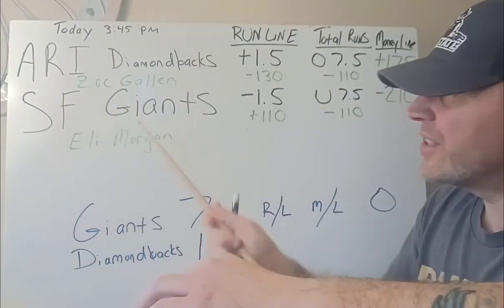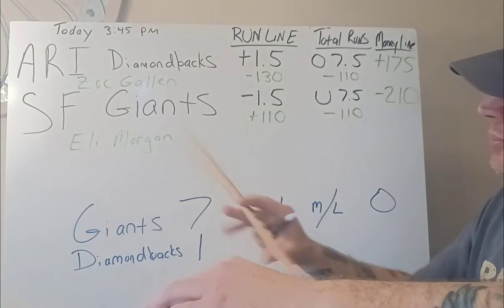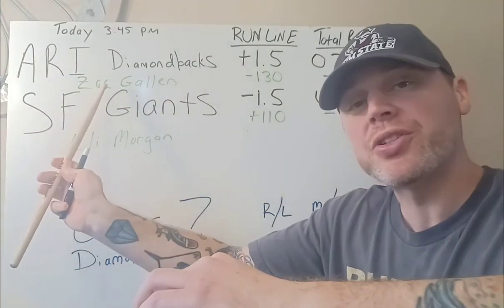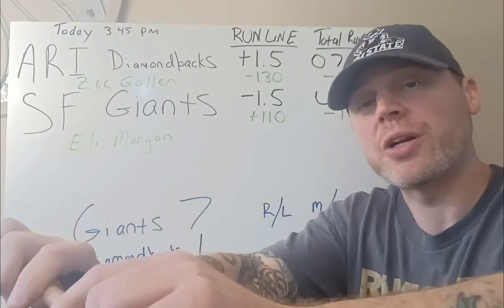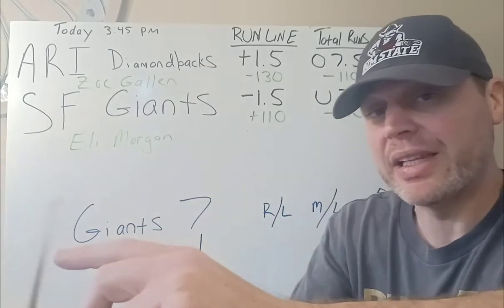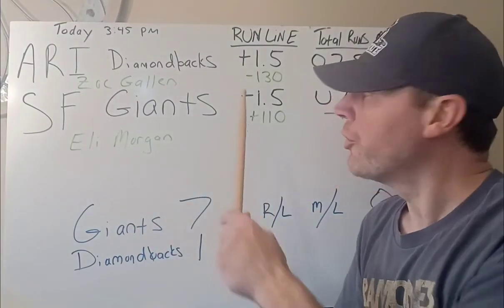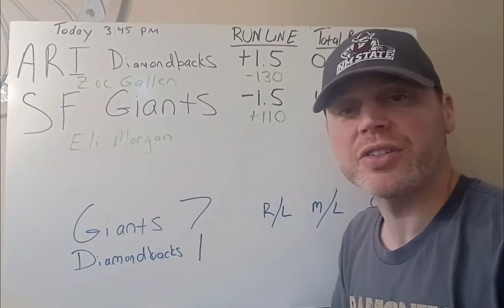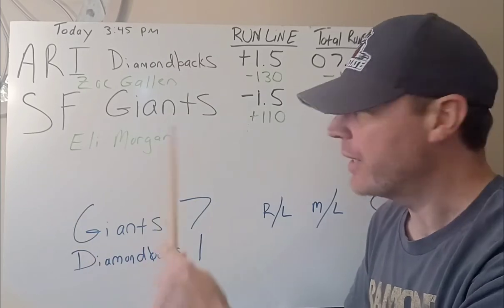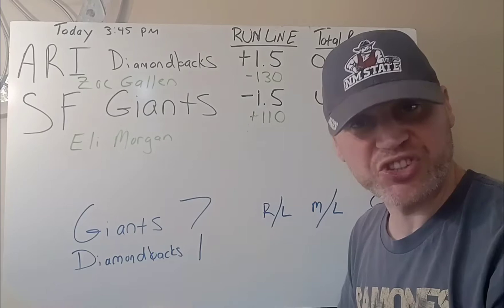When you pull up the baseball lines, this is an example of one game. You're going to see the teams listed and then three columns. Here we have the Arizona Diamondbacks and the Giants. The starting pitcher is listed under the team because the starting pitcher is really important in determining who you think is going to win and handicapping the game — it greatly affects the odds. The first line is the run line, which is the margin they have to win by. The favorite in this game is going to have a minus money line, and it's minus one and a half.